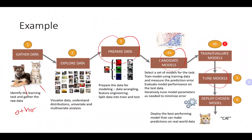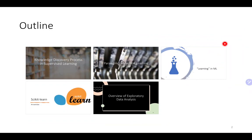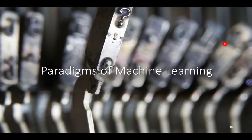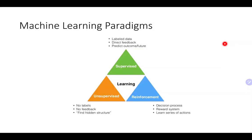Let's continue with the different paradigms of machine learning. The three main paradigms are supervised learning, unsupervised learning, and reinforcement learning. The main distinction between supervised and unsupervised is that we have labeled data for supervised learning, so the models can directly get feedback from their training.